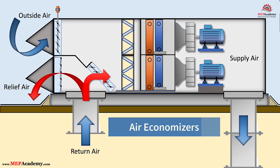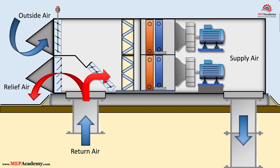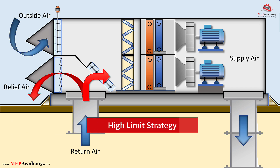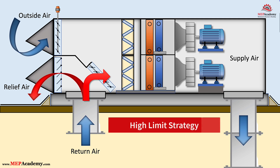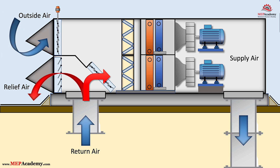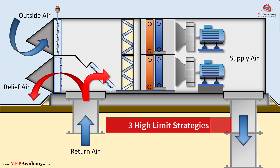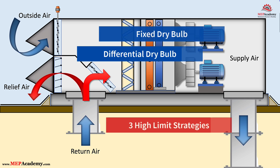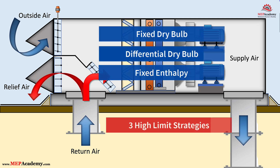Air economizers are a vital component of modern HVAC systems, designed to reduce mechanical cooling loads by using outdoor air for free cooling whenever conditions allow. High-limit strategies determine when outdoor air should not be used, typically to avoid introducing excessively hot or humid air that could increase cooling loads or compromise humidity control. In this video, we'll examine three common air economizer high-limit strategies – fixed dry bulb, differential dry bulb, and fixed enthalpy – with examples of each and the issues they may encounter.